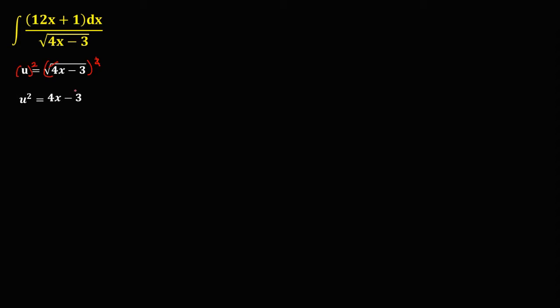Then to solve for x, transpose the negative 3 to the left, so that's u squared plus 3 equals 4x. Then divide both sides by 4, so x is equal to (u squared plus 3) over 4.